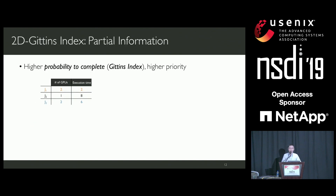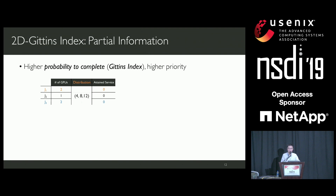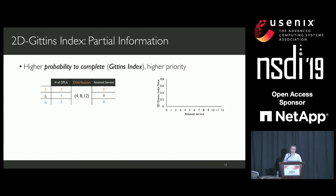Assume we have three deep learning jobs in our job queue. From the view of our scheduler, it has no knowledge about the exact execution time of each job. However, the distribution of jobs' total GPU time is provided by the cluster. The input to our scheduler is the job's attained service. This figure shows how the Gittins index value changes as the job's attained service increases under this distribution.